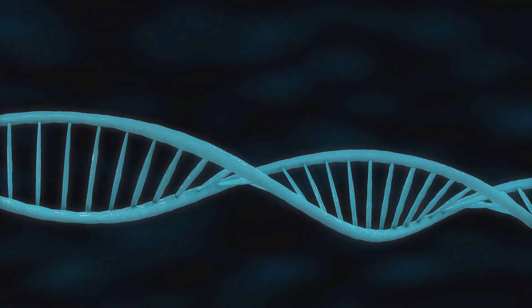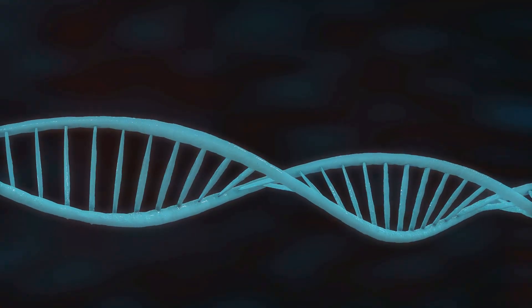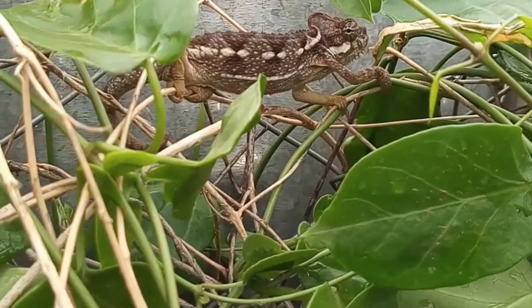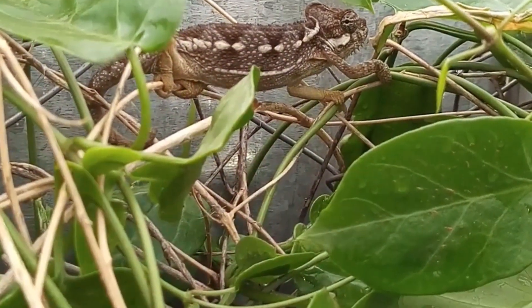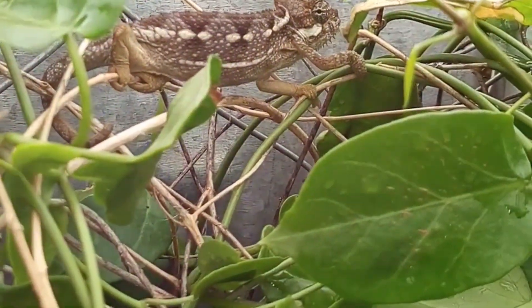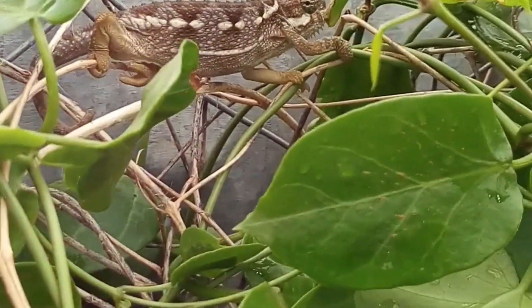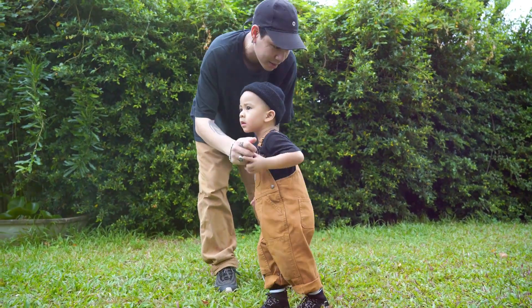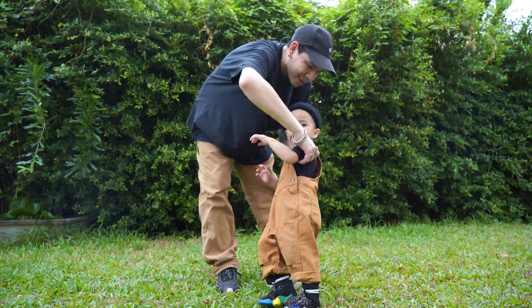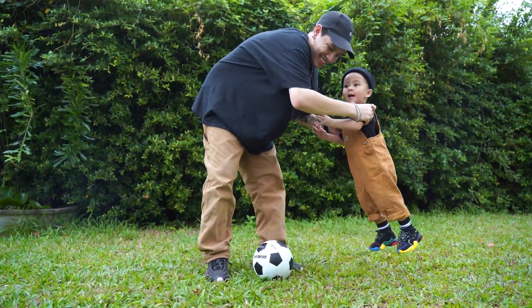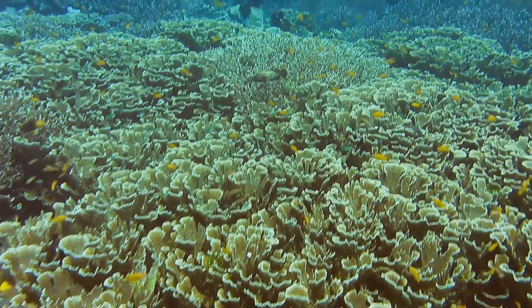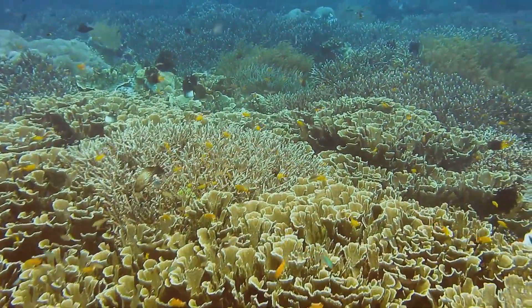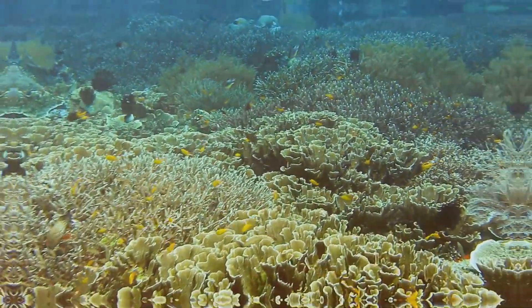But natural selection isn't just about survival — it's also about reproduction. The traits that help an organism survive often also help it reproduce, and those traits get passed on to the next generation, gradually changing the population. It's a slow process, but over millions of years it can lead to the incredible diversity of life we see today.